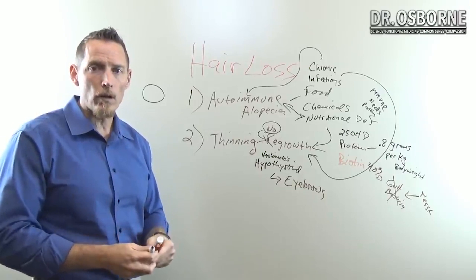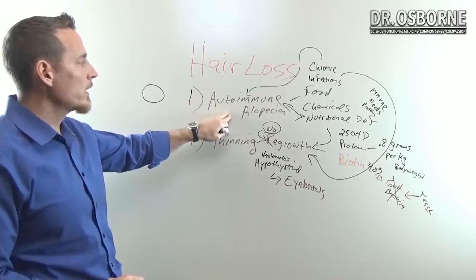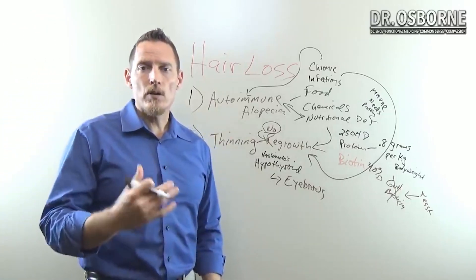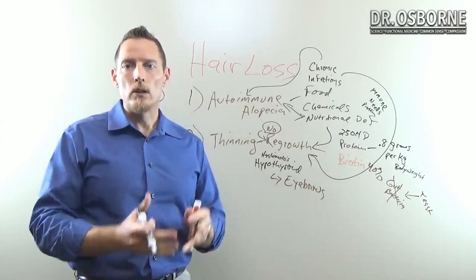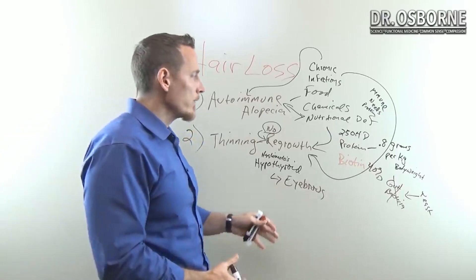Gluten-induced autoimmune alopecia and a recovery completely within less than two years as a result of simply removing gluten from the diet. That's the power of diet change.